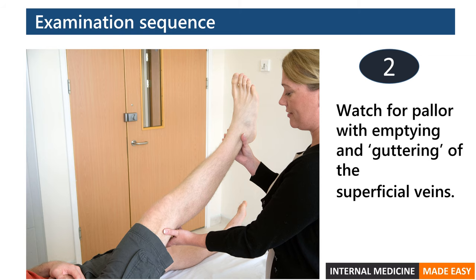Watch for pallor with emptying and guttering of the superficial veins. In a healthy individual, the entire leg should remain pink, even at an angle of 90 degrees. The development of pallor indicates that peripheral arterial pressure is unable to overcome the effects of gravity, resulting in loss of limb perfusion.